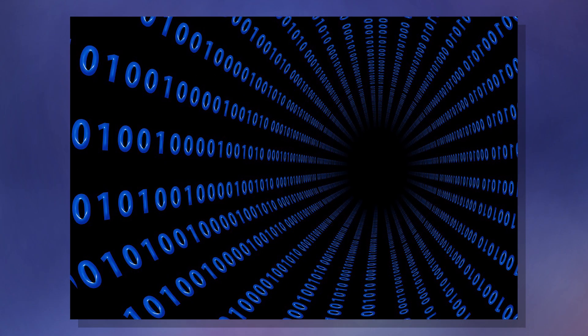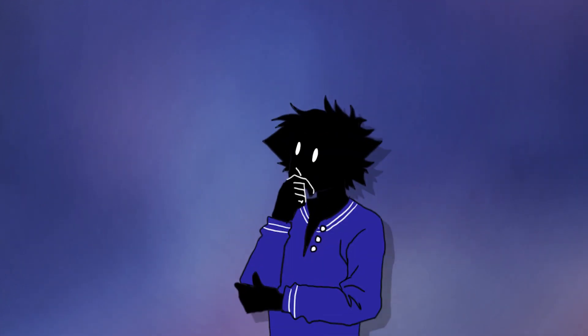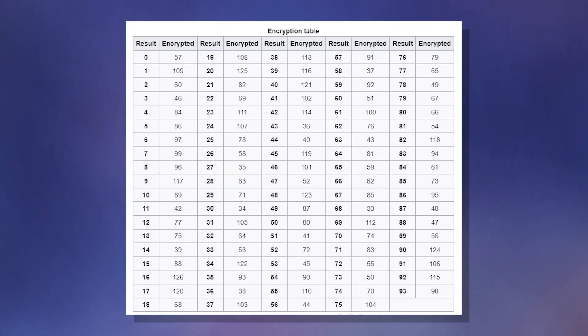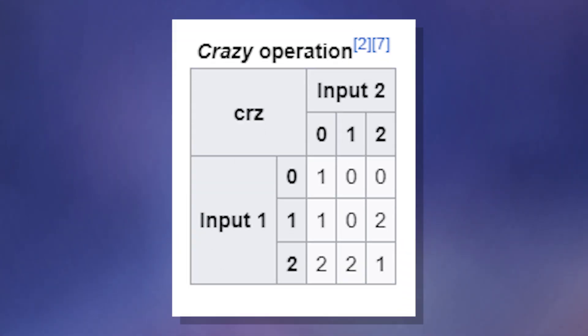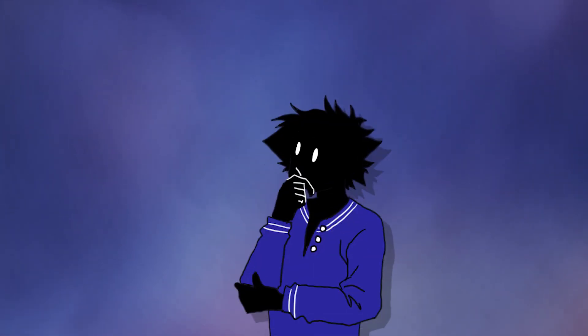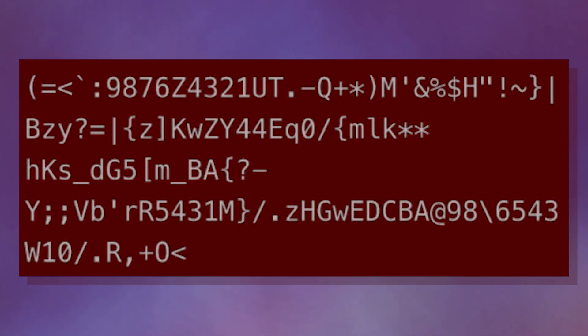Normally, programming languages compile to machine code called binary. However, Malbolge converts to something called trinary, which instead of just using a 0 and 1, uses a 0, 1, and 2. Also, what you input has to go through a layer of encryption on your end, and data is interpreted through a table called a crazy operator. All of that combined creates code that looks like this.